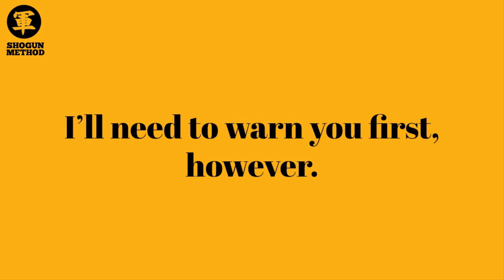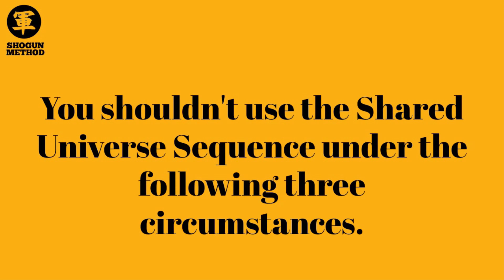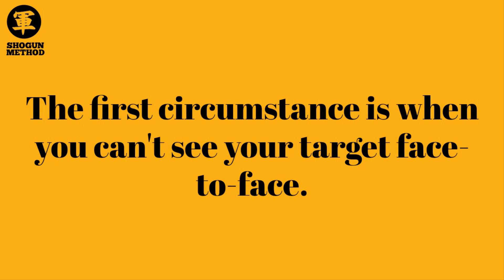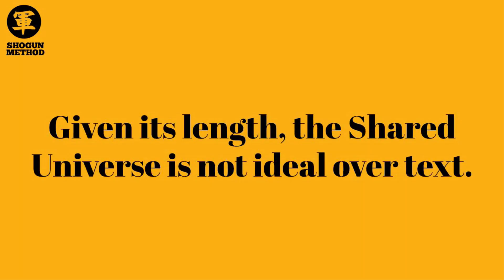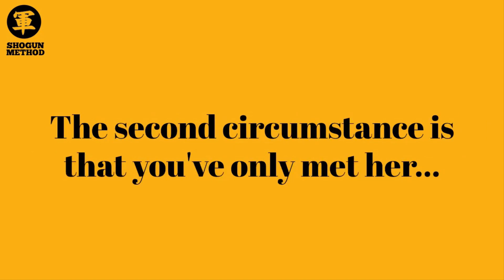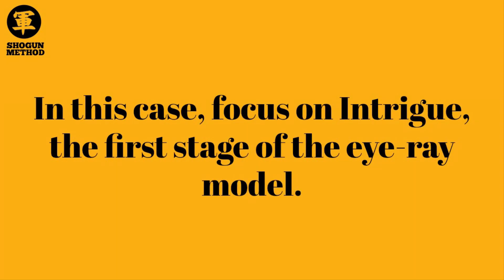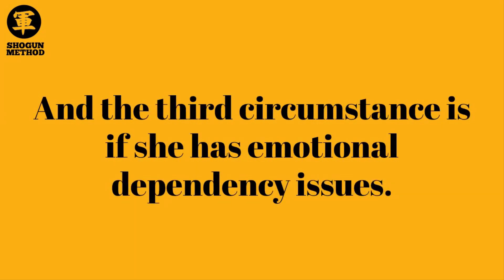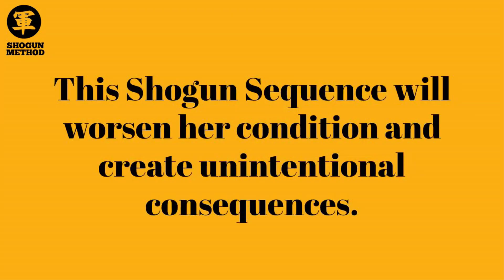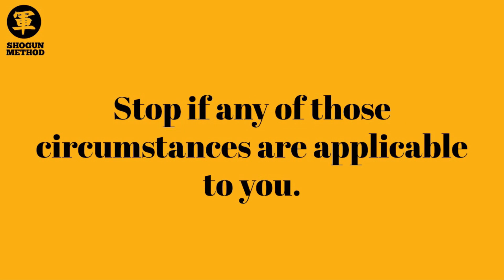You shouldn't use the Shared Universe Sequence under three circumstances. First, when you can't see your target face-to-face — given its length, it's not ideal over text. Second, if you've only just met her and have barely built any foundational rapport; in that case, focus on Intrigue, the first stage of the IRA model. Third, if she has emotional dependency issues, as this sequence will worsen her condition and create unintentional consequences.